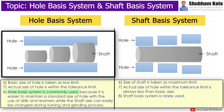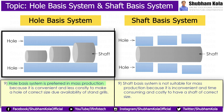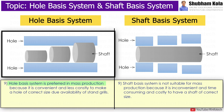The hole basic system is commonly used because it is easier to maintain a standard size of hole with the use of drills and reamers, while the shaft size can easily be changed during turning and grinding process. The hole basic system is preferred in mass production because it is convenient and less costly to make a hole of correct size.